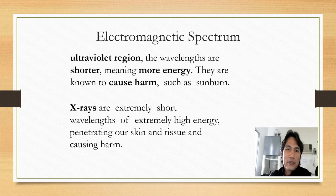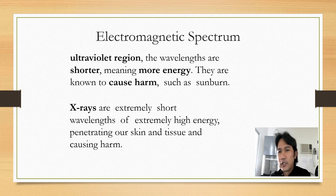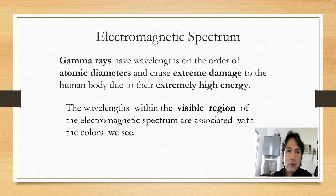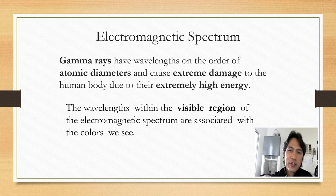The ultraviolet region has shorter wavelengths, meaning more energy, and is known to cause harm such as sunburn. X-rays, used to image tissue, have extremely short wavelengths and thus extremely high energy. Gamma rays are extremely high in energy with extremely short wavelengths. The visible region comprises a tiny fraction of the entire electromagnetic spectrum, and is associated with the colors that we see — making nature beautiful.